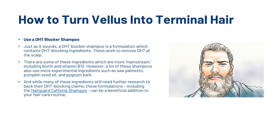The next thing you can do is use a DHT blocking shampoo. Just as it sounds, a DHT blocker shampoo is a formulation which contains DHT blocking ingredients that work to remove DHT at the scalp. There are some more mainstream ingredients including biotin and vitamin B12; however, a lot of these shampoos also use experimental ingredients such as saw palmetto and pumpkin seed oil. While many of these ingredients still need further research to back their DHT blocking claims, these formulations — including the Hairguard Caffeine Shampoo — can be a beneficial addition to your hair care routine.